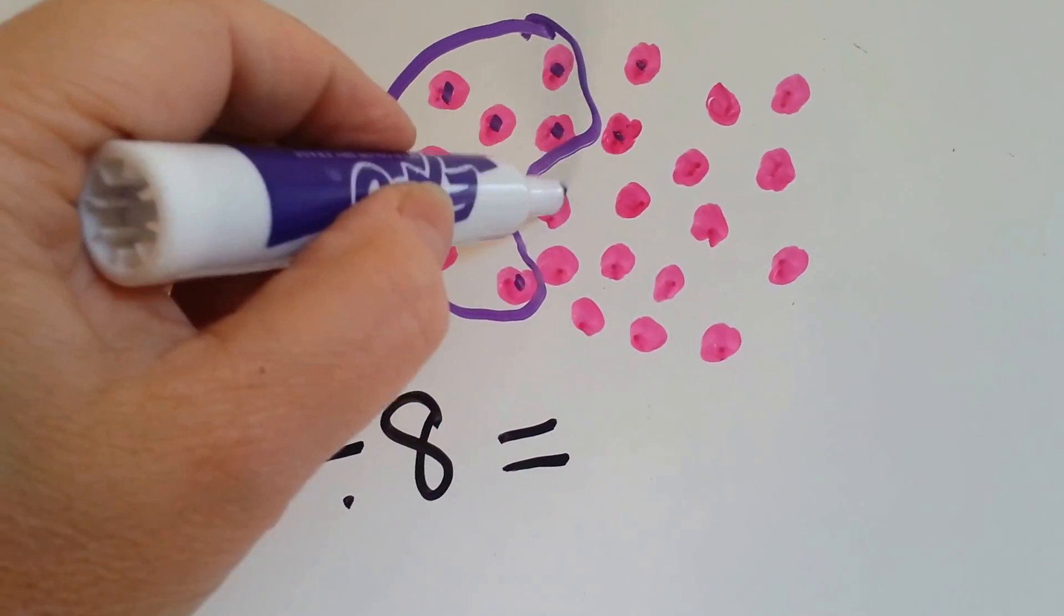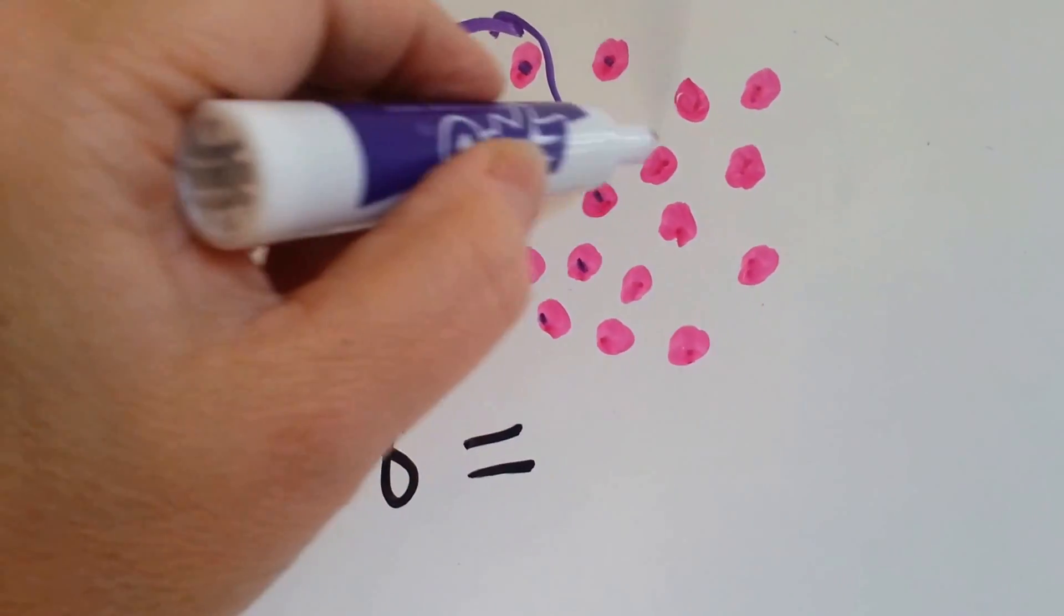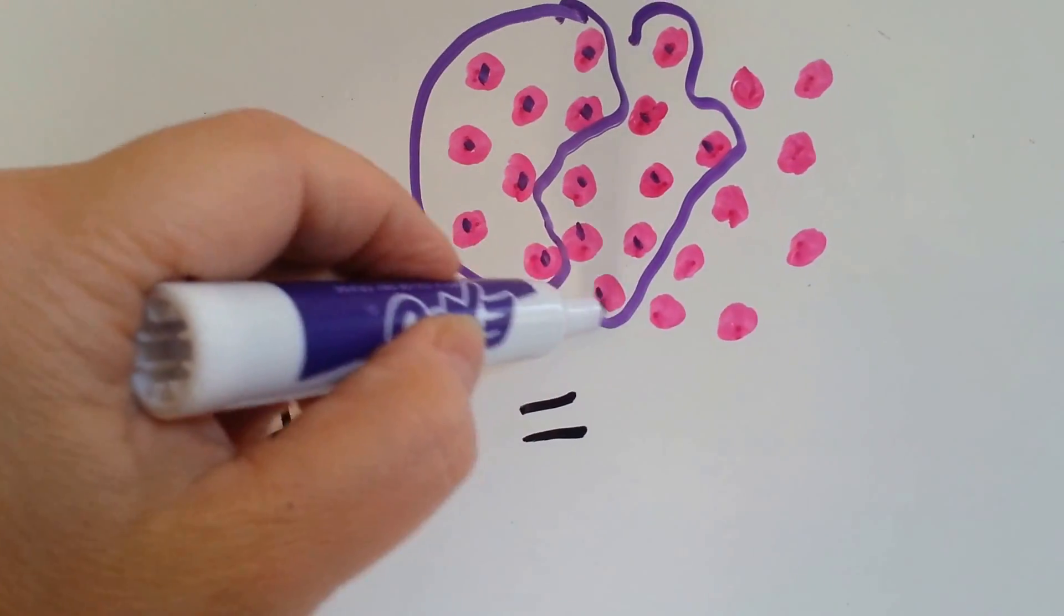Then we have 1, 2, 3, 4, 5, 6, 7, 8. That's our second group.